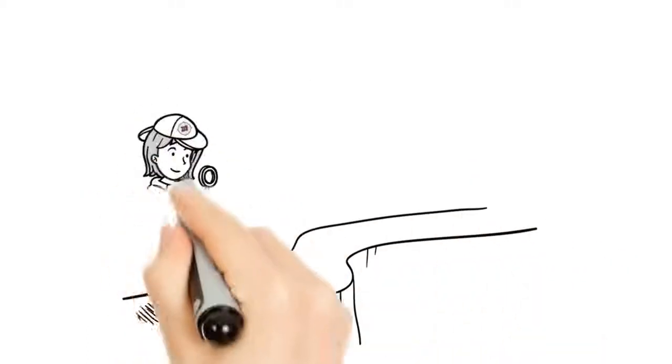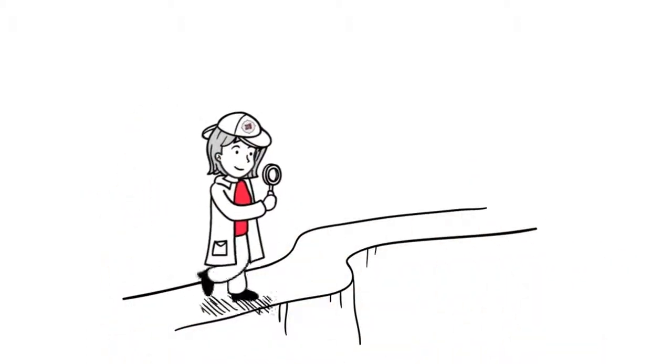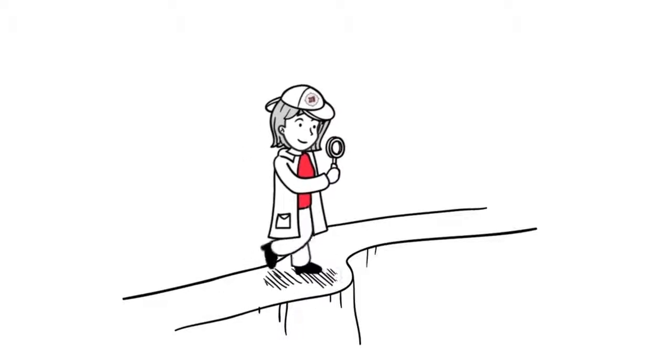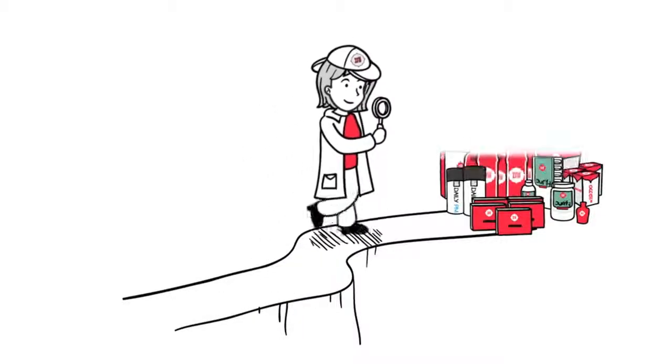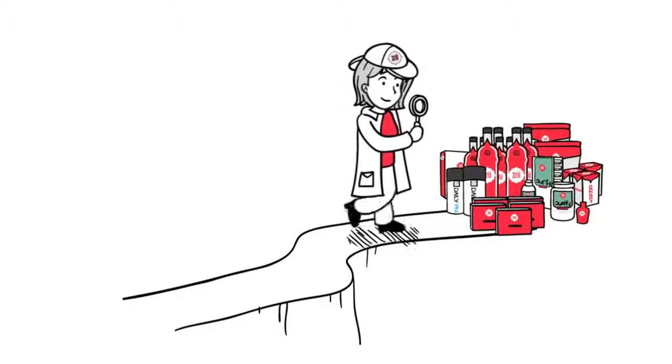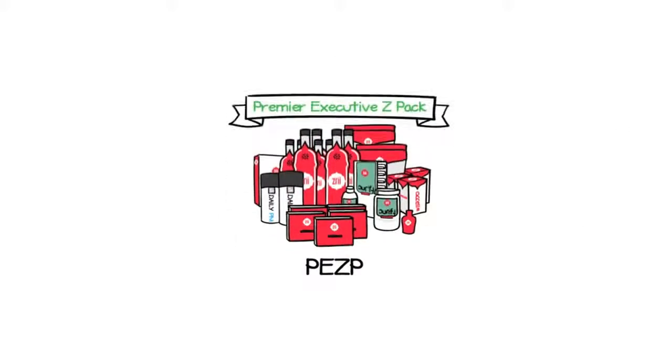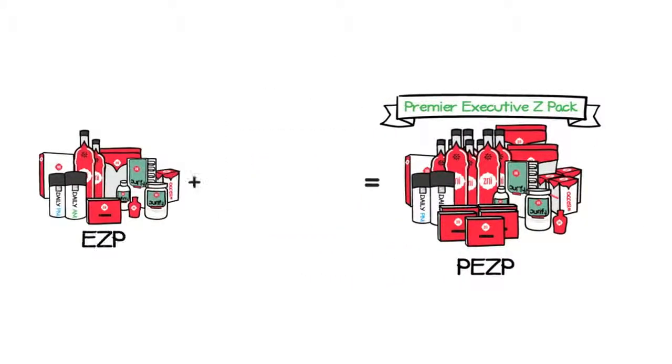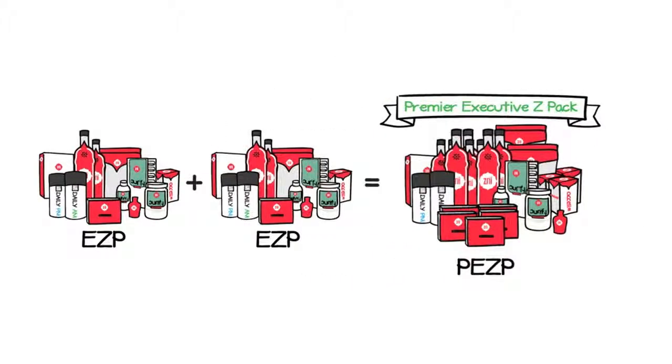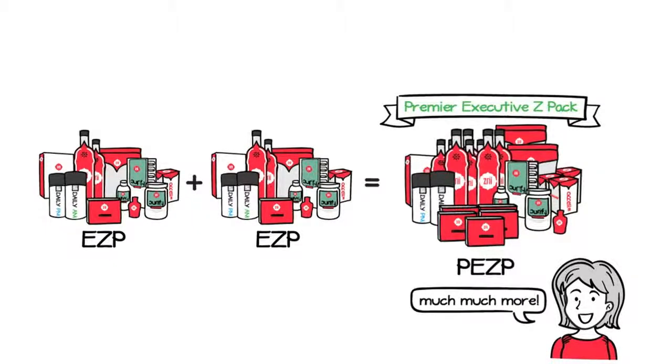But there is another way. You see, at Zree, we know you want to grow your business as quickly as possible. That's why we provide you a fast-track option with the Premier Executive Z-Pack, or PEZP for short. With a PEZP, you get double the products and all of the basic benefits you get from an EZP. But the PEZP includes more, much, much more.